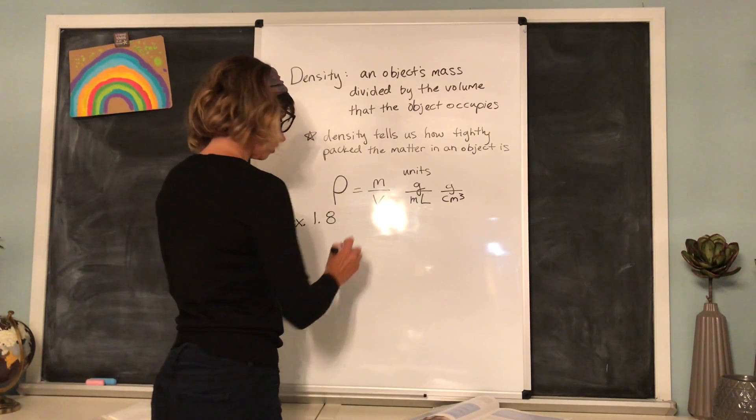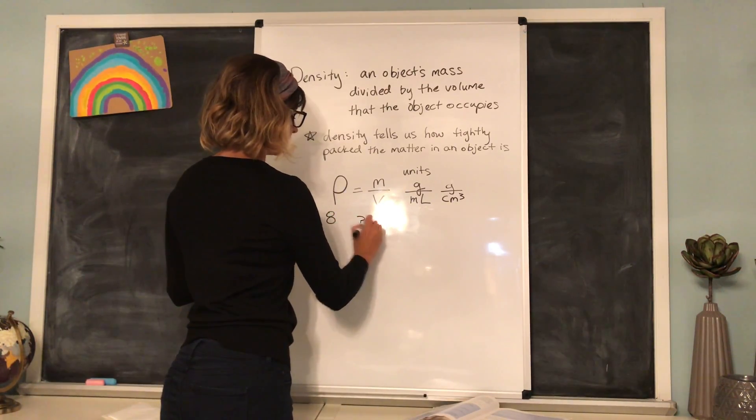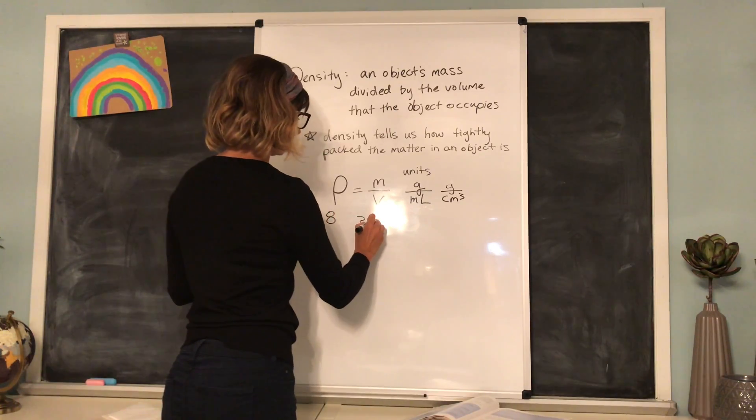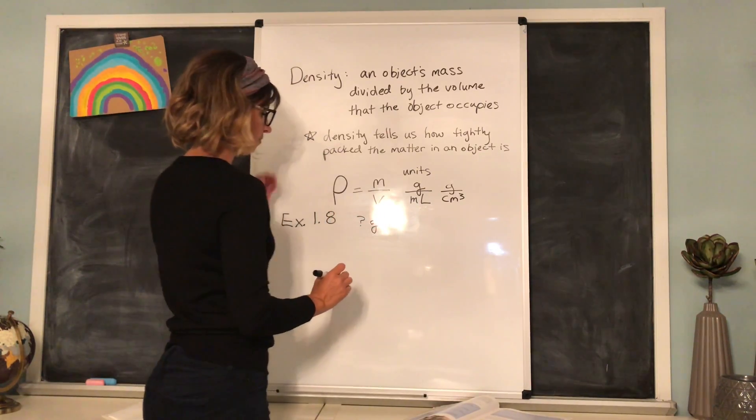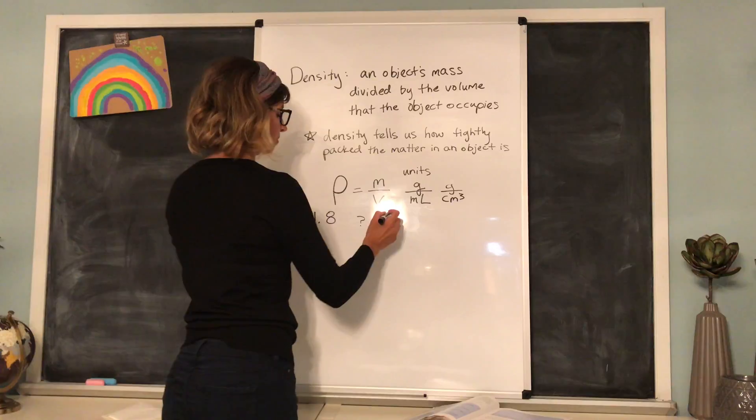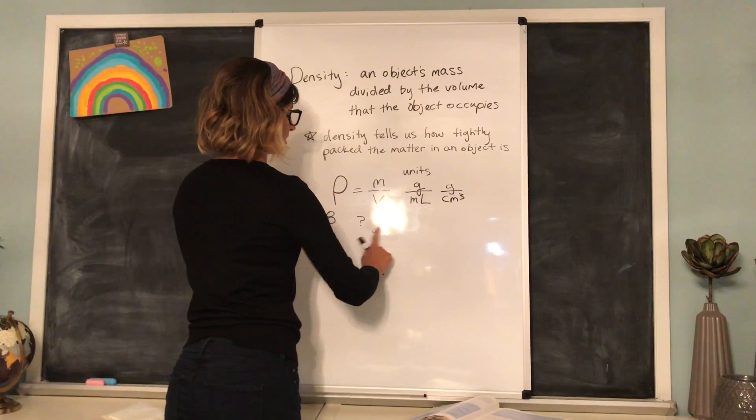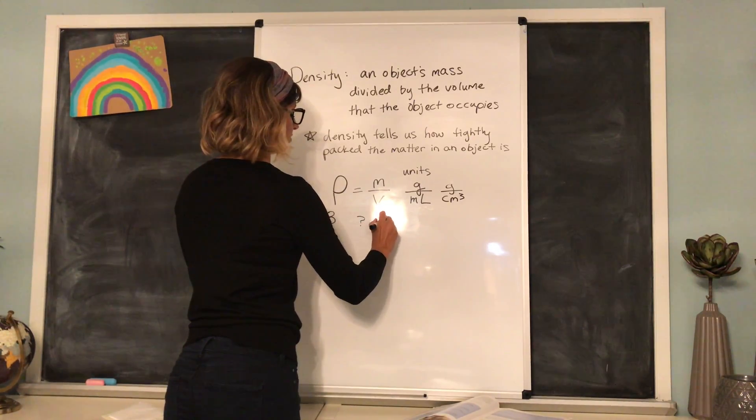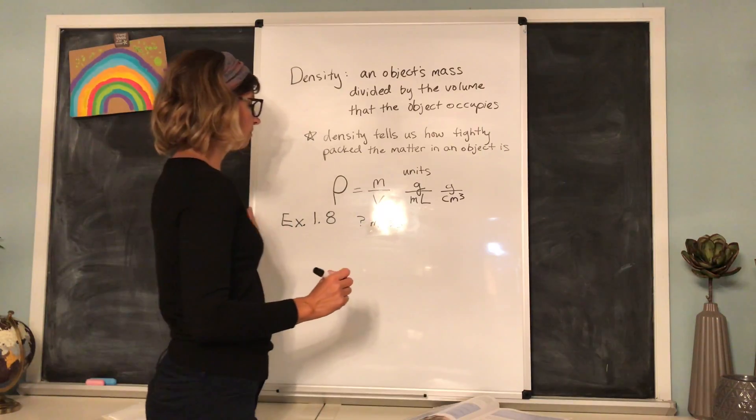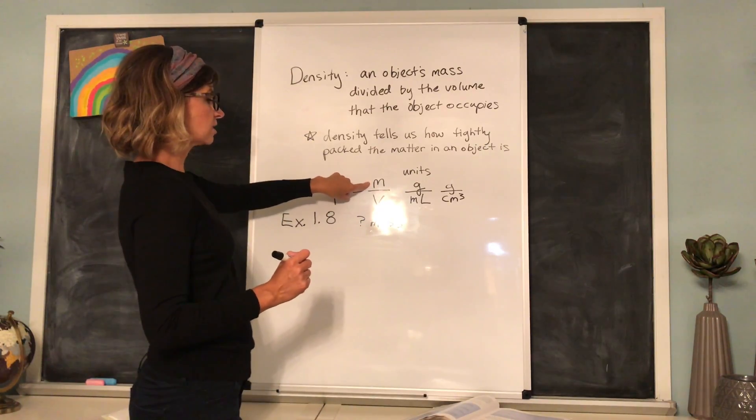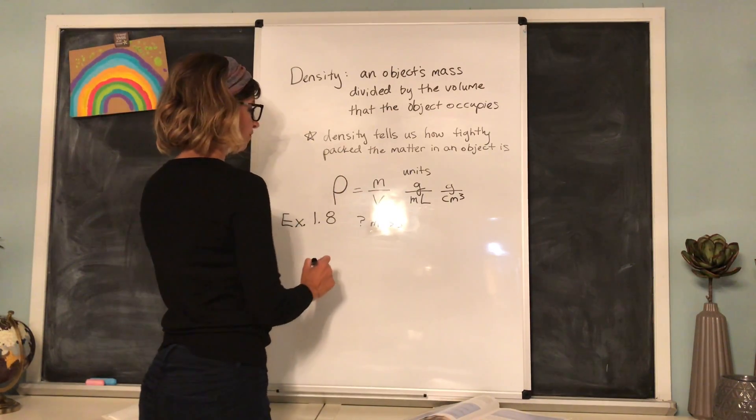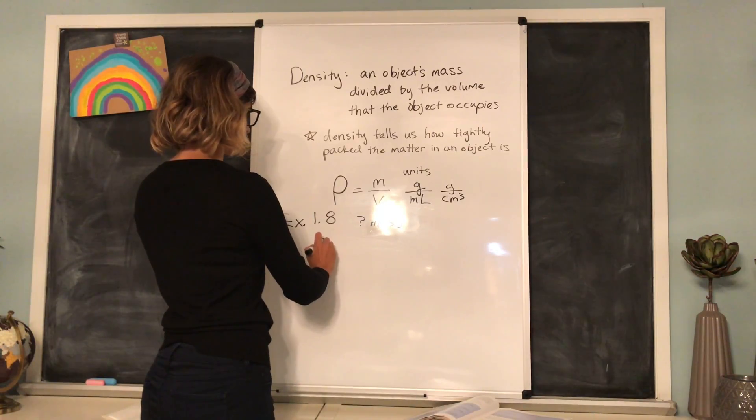And we are looking for the mass. How many grams? Or maybe it's going to be kilograms. I should say question mark mass. We're looking for the mass of the nugget. So here we're going to solve for m. So let's rearrange our formula here using our algebra skills.